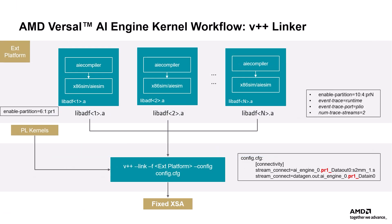After compiling the kernels, we proceed to the V++ linker stage. Here, you will need to create a linker configuration file. This file contains the connectivity details for your kernels, specifying how they interact with each other and with the rest of the system. Running the linker with the .cfg file generates an XSA file. The XSA file represents the complete hardware design and is required for the next step in the workflow.